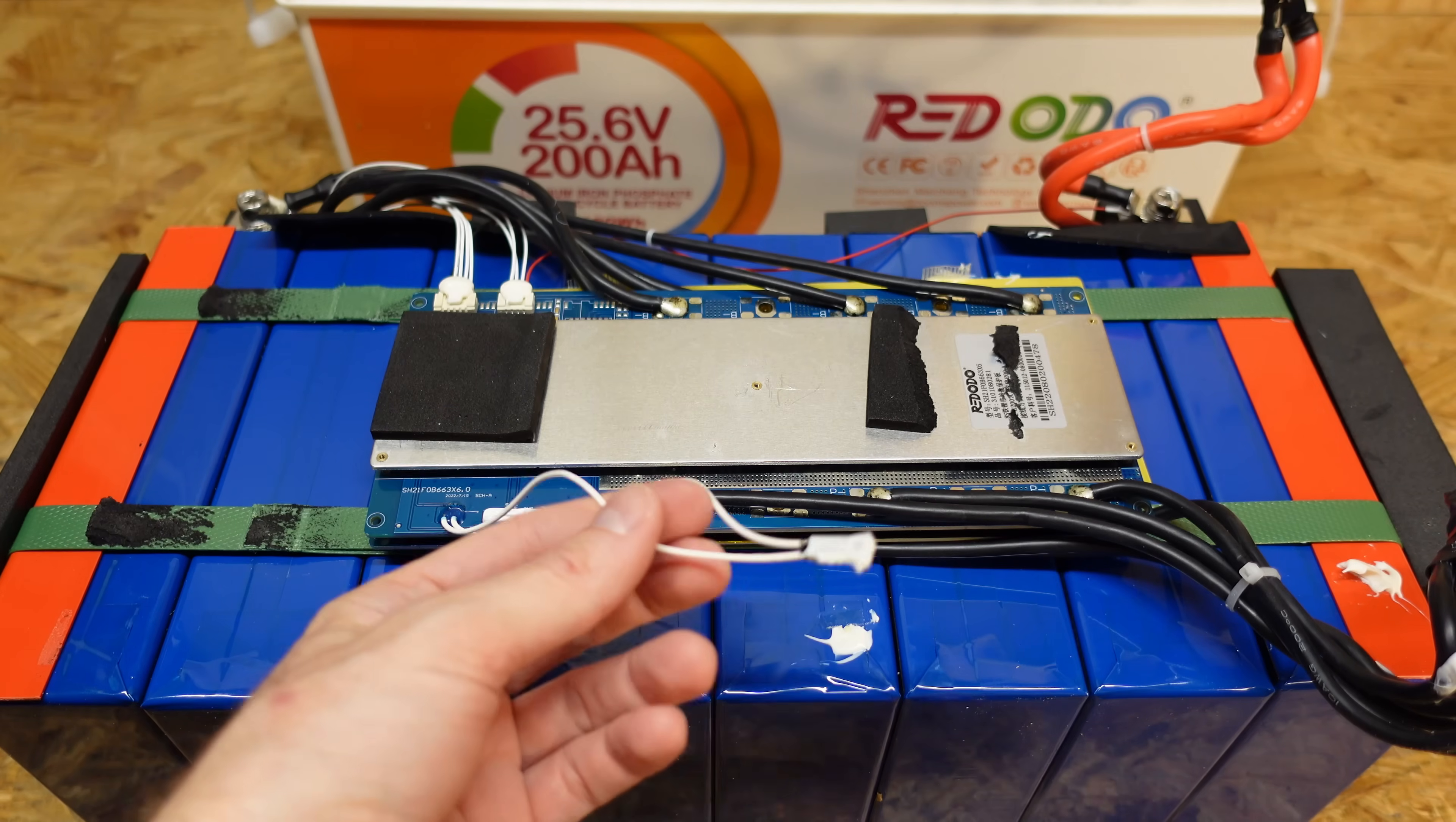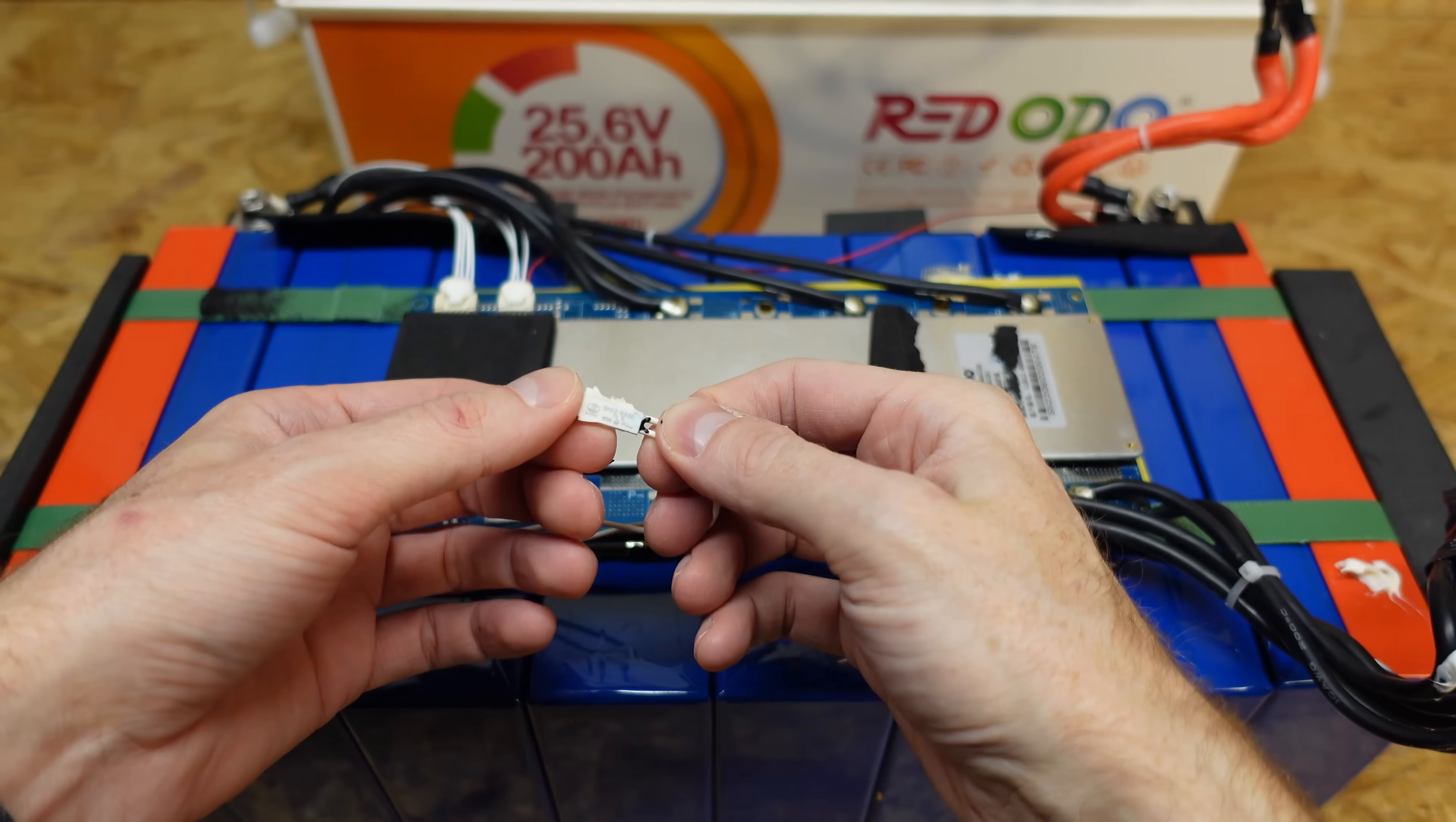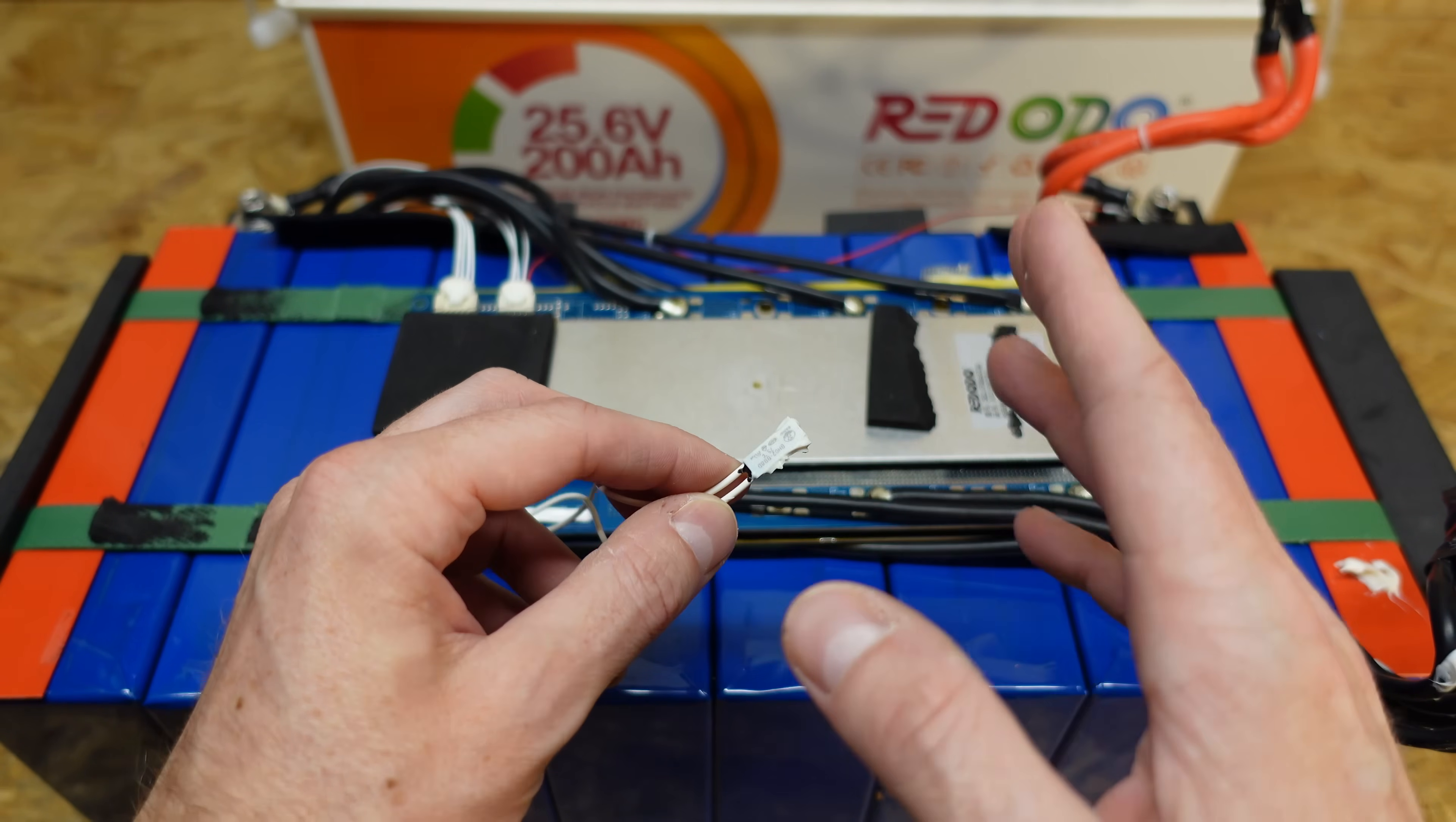So looking at the BMS here, I did remove this thermal switch and it does say 75 degrees Celsius on it. So that does prove that this is not an actual temperature sensor. It's a thermal switch.